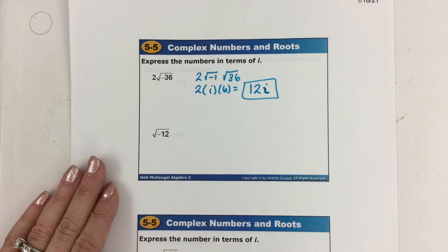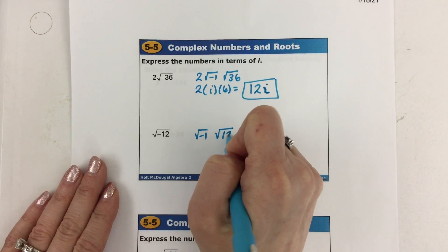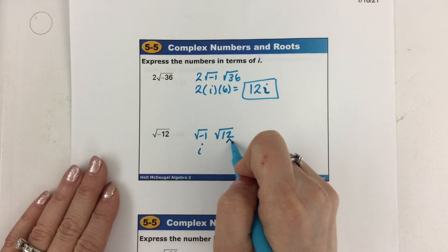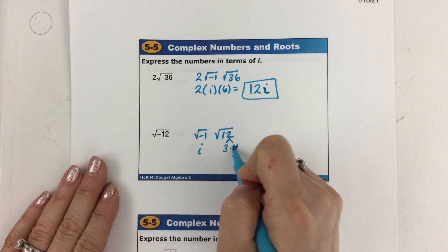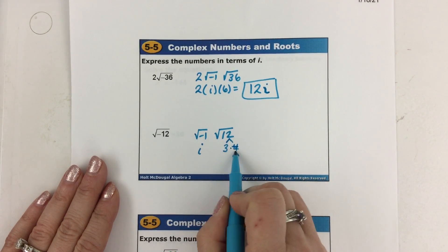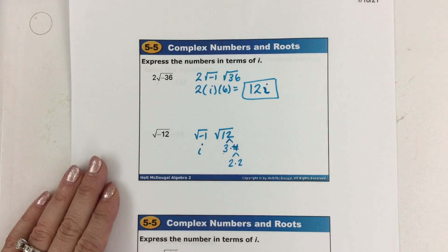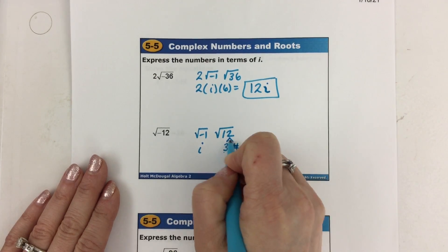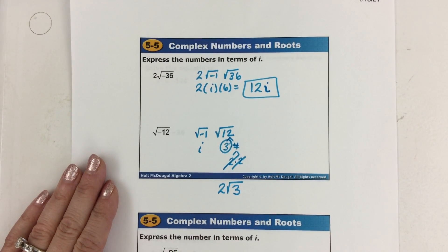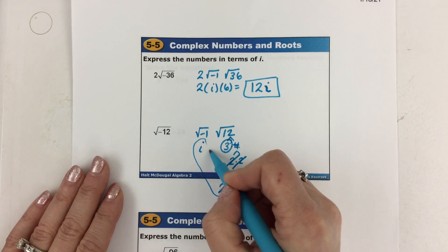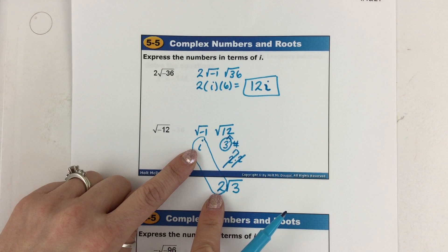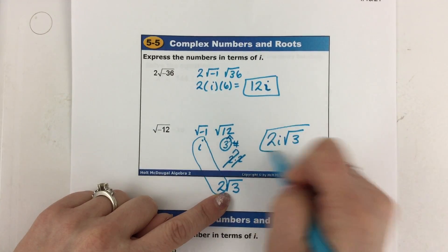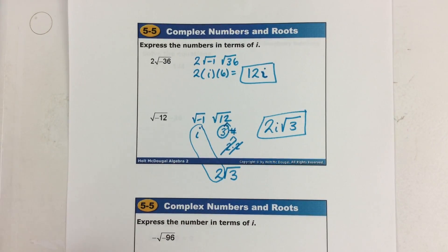Let's look at the next one. Negative underneath — pull out the negative 1. Now it's a positive 12, so this is i — it's imaginary. 12 is not a perfect square, so we do our factor trees. 12 can be broken down into 3 times 4, and 4 into 2 times 2. I can cross off a pair of 2s and write one 2 on the outside, leaving 3 underneath. Whatever's not underneath the symbol gets multiplied together — the i and the 2 — giving i times 2, which is written as 2i. Underneath the symbol stays the square root of 3. So this is 2i times the square root of 3.